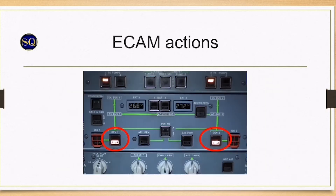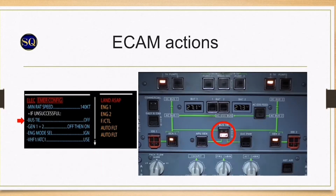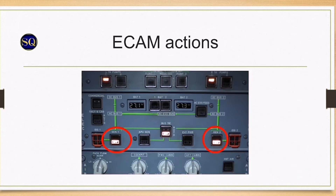Attempt a reset of generator 1 and 2 by turning off then on. If not successful, set bus tie to off to isolate both generators. With the bus tie off, a further attempt to reset the generators is performed.